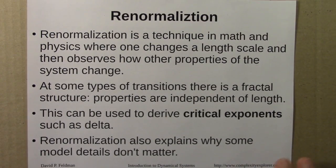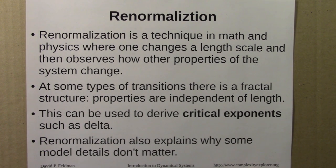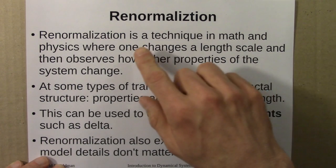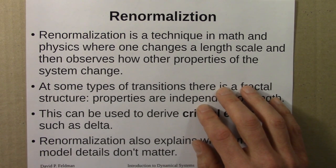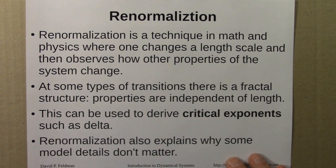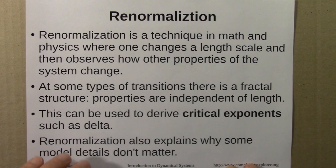Lastly, I tried to explain how universality is possible. There are two pieces to this: first, how is it possible in one-dimensional maps, and second, what do one-dimensional maps have to do with actual physical systems? That latter question I'll try to address in the next couple of units. For the first question — how is universality possible in one-dimensional maps — that can be explained very nicely by a mathematical theory or set of techniques called renormalization, or the renormalization group. Renormalization is a technique in math and physics where one changes a length scale and then observes how other properties of the system change.